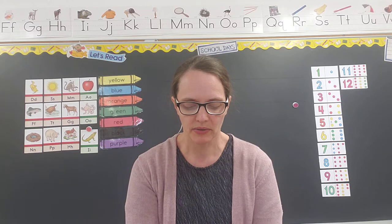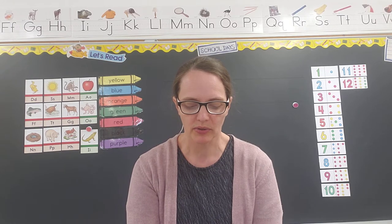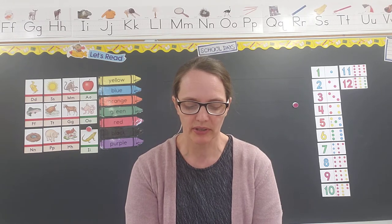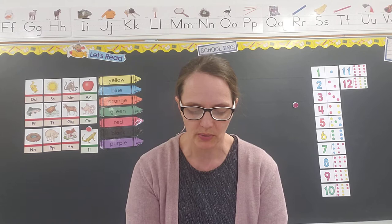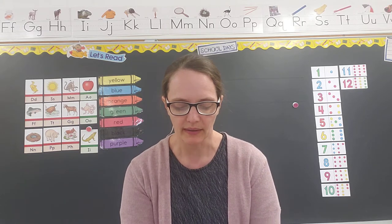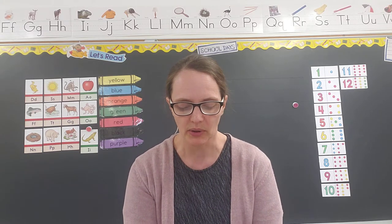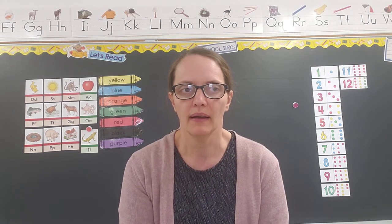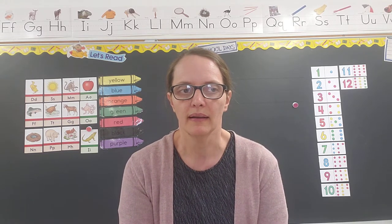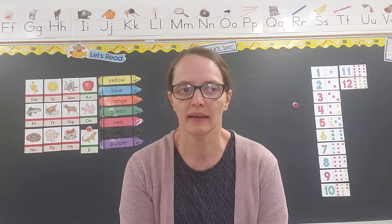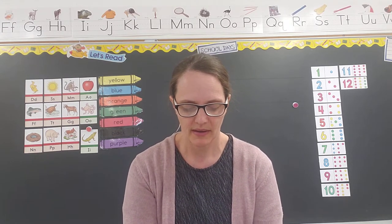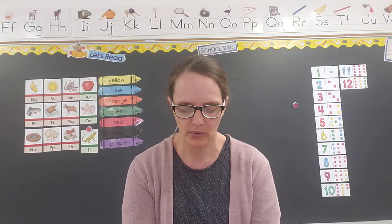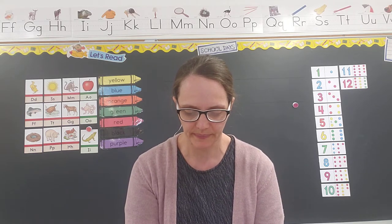Everybody, got your pencils out? You can circle that very first letter in umbrella — the U. Circle the U and let's listen to it one more time. 'Uh' — umbrella. Hear that 'uh' sound in umbrella. Circle the U and we'll go on to the next one.